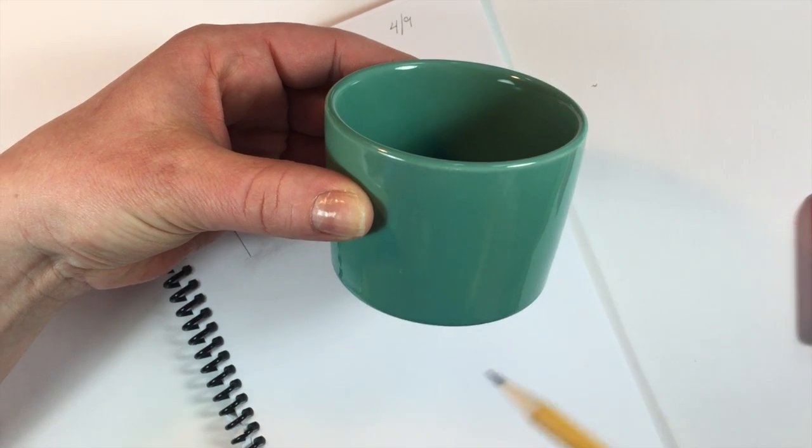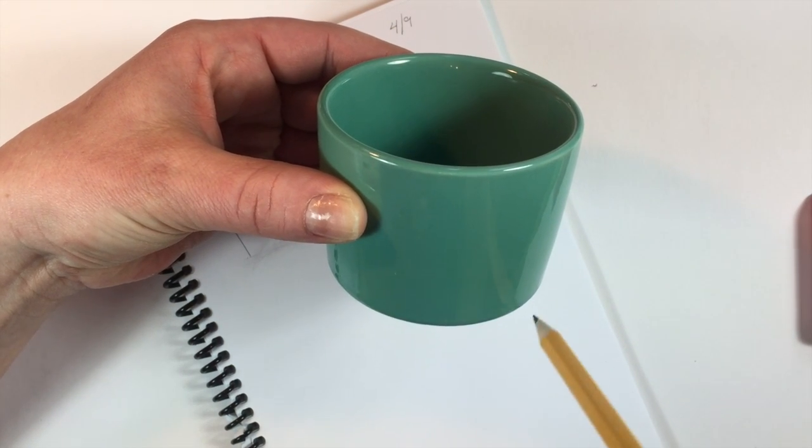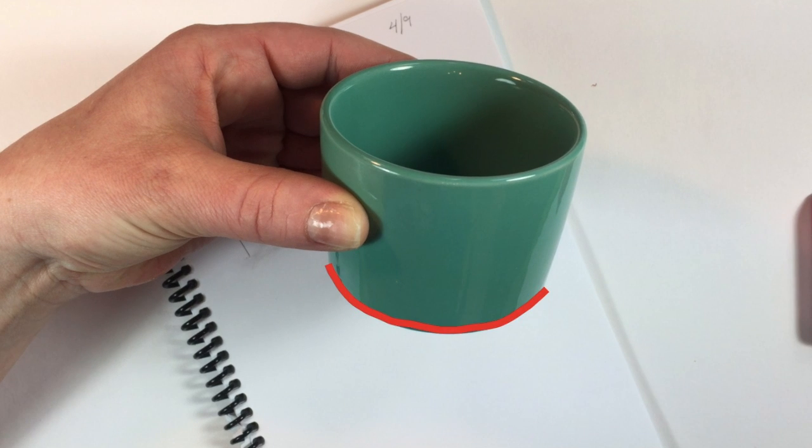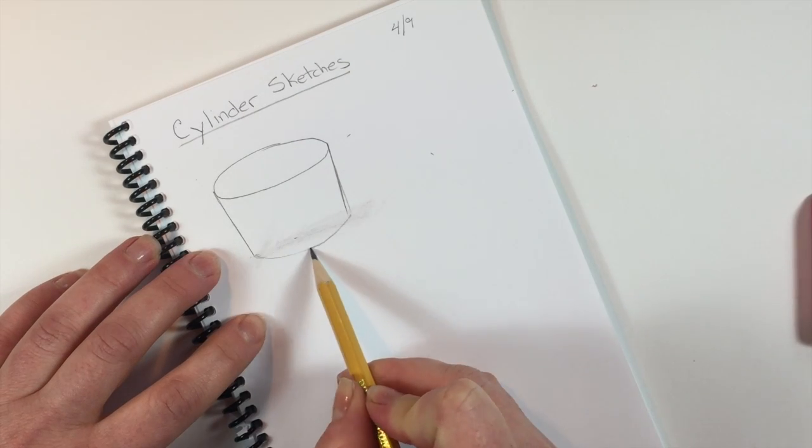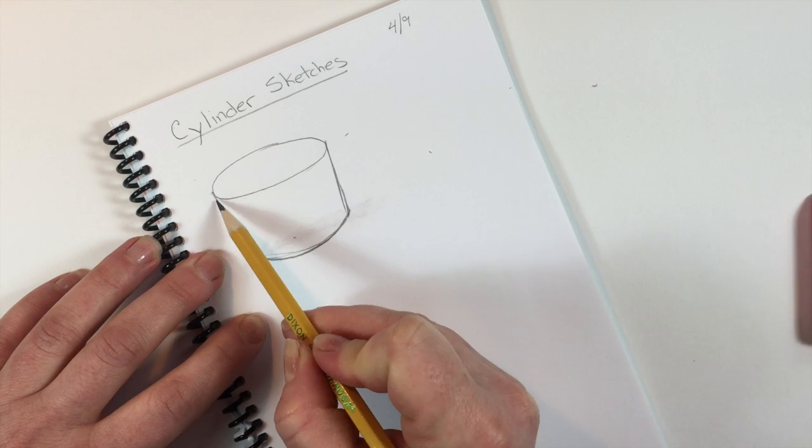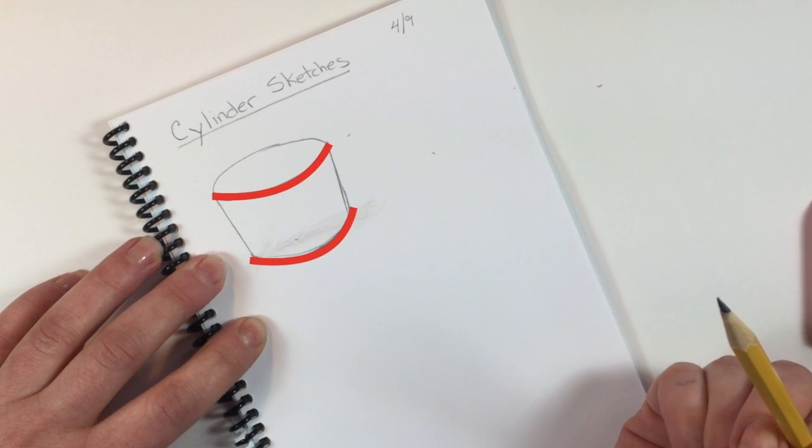Observe, let's look carefully at my cylinder. That bottom, is that a straight line? No, it's definitely a curved line. Make sure the bottom of your cylinder is always a curve. It should follow or match the curve of that top cylinder.